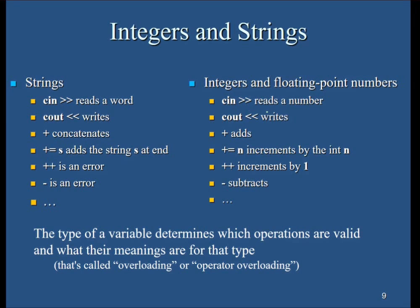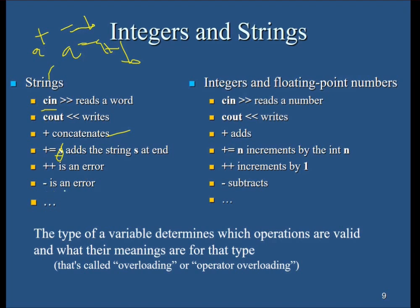For strings: cin reads a word, cout writes a word, and plus means concatenation — adding strings. Plus-equals means adding a string to the end of an existing string. Plus-plus or minus on a string is an error — those operations are not possible on strings. That is why there are different data types, each with their valid operations.